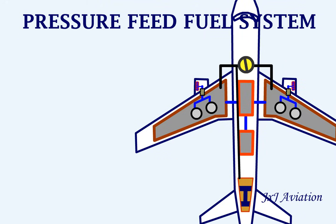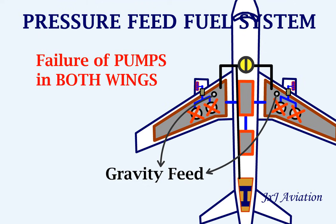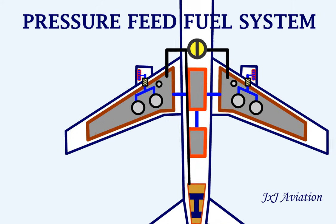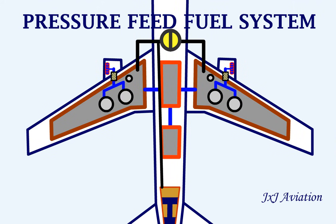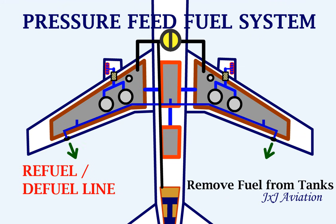If we consider failure of all the pumps in both wings, then there is a small gravity feed pump which supplies fuel to the engines using gravity. Along with these components, the aircraft's fuel system has a refuel/defuel line which is used to fill the tanks with fuel or to remove the fuel from the tanks.